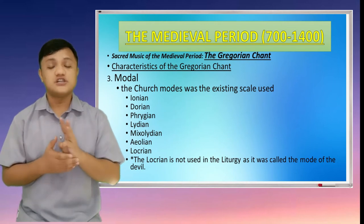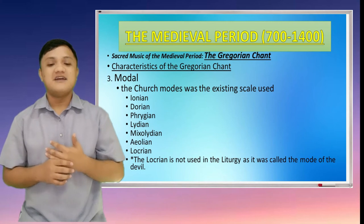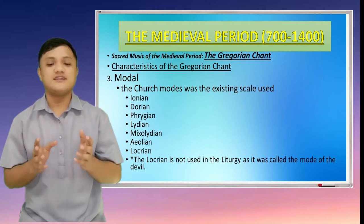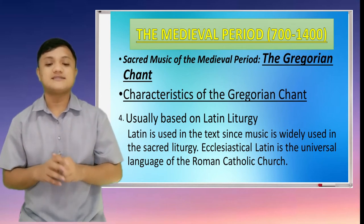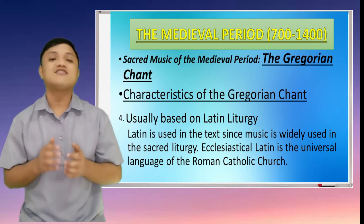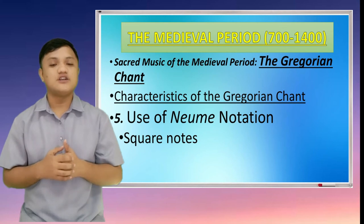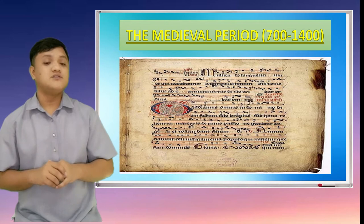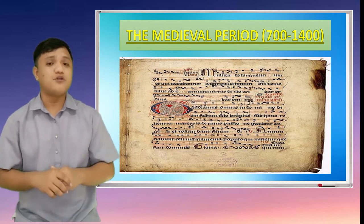The third characteristic is modal — the church mode was the existing scheme used. We have the Aeolian, Dorian, Phrygian, Lydian, Mixolydian, Aeolian, and Locrian. The Locrian is not used in the liturgy as it was called the mode of the devil. The fourth characteristic is usually based in Latin liturgy, since Ecclesiastical Latin is the universal language of the Roman Catholic Church. And number 5, it uses neume notation, meaning square notes. This is an example of a Gregorian chant written in neume notation.